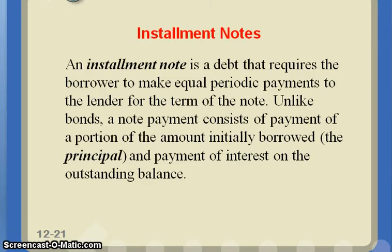An installment note is a little bit different — we're done talking about bonds. With a bond, you pay interest, interest, interest, and then a big amount of principal at the end. An installment note is set up differently in that you pay both interest and principal with every payment you make. This is similar to a car loan or a mortgage. The journal entries for installment notes are identical to bond entries; the only difference is that you are paying some principal along with some interest each time.